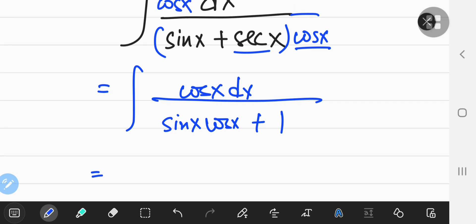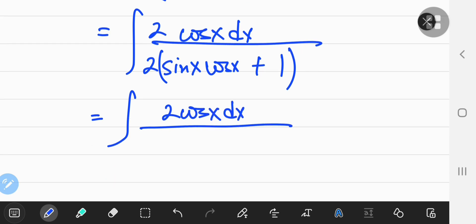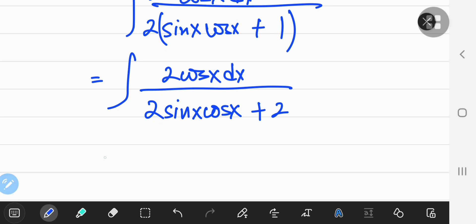So next up, what I want to do is multiply again, upstairs and downstairs by the number 2. So by multiplying, I get 2 times cos x dx, but I'm not going to write this as sin 2x. I'm going to leave it as 2 times sin x cos x, and the plus 2 comes along with it.